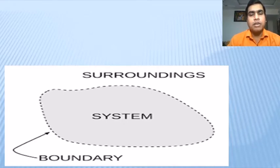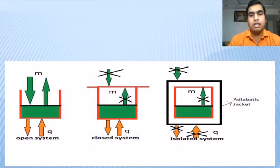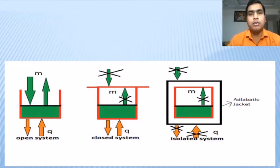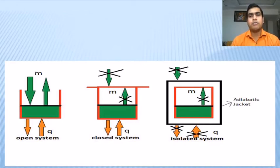So in thermodynamics, when we are studying the system, we have to understand what are the different types of systems that are possible. In thermodynamics, there are three different types of systems: open system, closed system, and isolated system. An open system is one in which both exchange of mass as well as energy are possible. Whereas in a closed system, the exchange of mass is not possible but exchange of energy is allowed. Whereas in an isolated system, both the exchange of mass and energy are restricted. Such systems are called isolated systems.